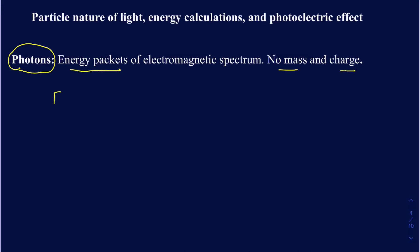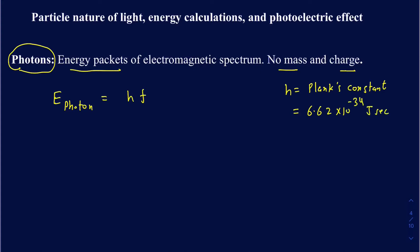If I want to calculate the energy carried by photons, it's going to be equal to h times the frequency. The h here is called Planck's constant — it's a constant number you don't have to memorize, and it's very likely to be given to you. It's actually 6.62 times 10 to the minus 34 joules-seconds.